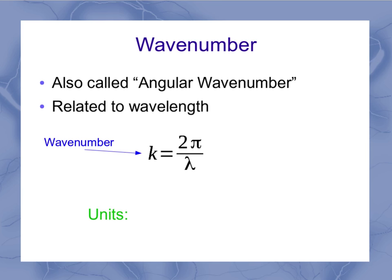So what about our units? For wavenumber, I'm going to have radians per meter. And the meter comes from my wavelength, lambda, and the radian comes from the 2 pi. So this is really 2 pi radians per wavelength in my equation up here.